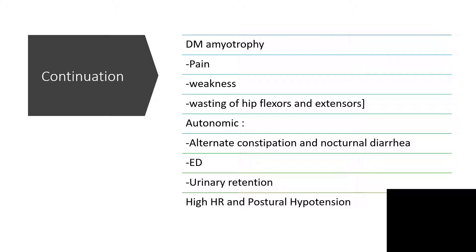Another condition is autonomic dysfunction, where there will be alternating constipation and nocturnal diarrhea, erectile dysfunction, and urinary retention. Tachycardia and postural hypotension are also features. Erectile dysfunction in men is a serious issue affecting stability of family life. Constipation and nocturnal diarrhea, urinary retention, as well as postural hypotension should all be addressed appropriately.